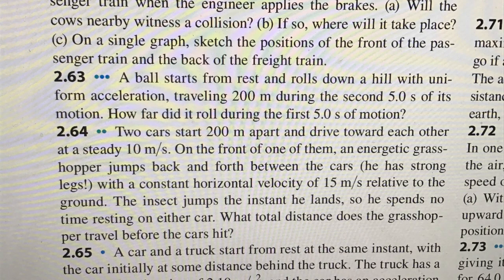All right, so the next problem we're going to take a look at is problem 2.63 from the Young and Friedman University Physics book. A ball starts from rest and rolls down a hill with uniform acceleration traveling 200 meters during the second five seconds of its motion. How far did it roll during the first five seconds of its motion?